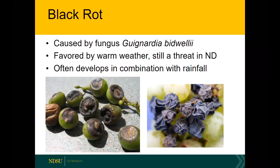Black rot is caused by a fungus — its scientific name is Guignardia bidwellii. It's favored by warm weather, but it's still a threat in North Dakota. It gets warm enough in the summers here that you will see black rot. It often develops in combination with rainfall, and that's a repeating theme with all three of these pathogens — they're all heavily dependent on relative humidity and rainfall.